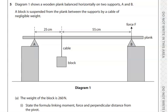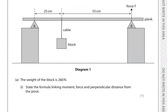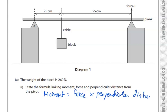A plank is supported between two supports by a cable of negligible height. The weight of the block is given as 260 newtons. State the formula linking moment, force, and perpendicular distance. We know that the moment is equal to force times perpendicular distance.